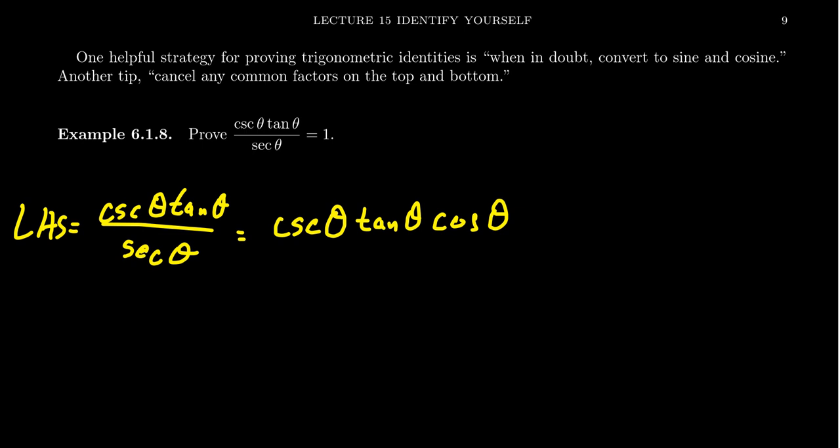So that's one step to converting things to sines and cosines. Next, how do I convert cosecant into sines and cosines? Well, by the reciprocal identity, I put it in the denominator. Cosecant is 1 over sine. Tangent is sine theta over cosine theta. And we already have a cosine in the numerator right there.